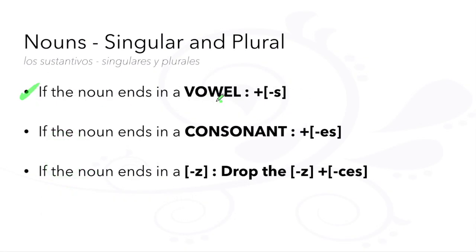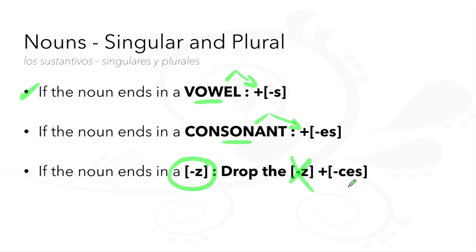If the noun ends in a vowel, add an S to the end of the word. If it ends in a consonant, add an ES. And if it ends in a Z, you drop that Z and add CES.